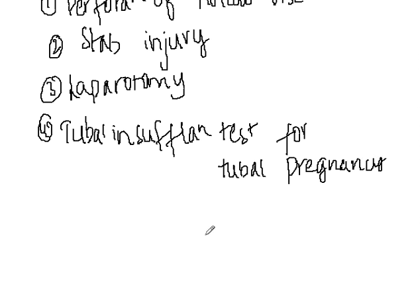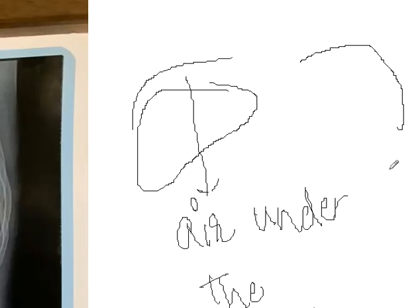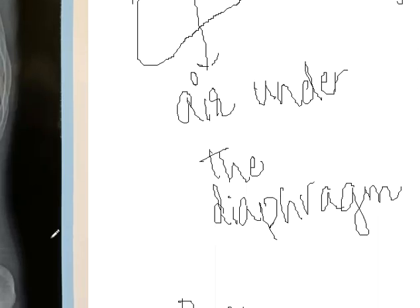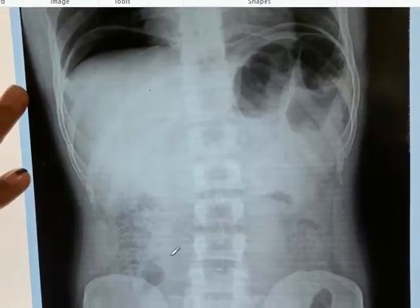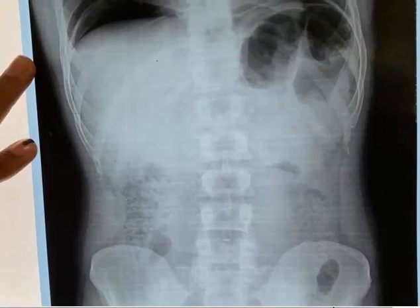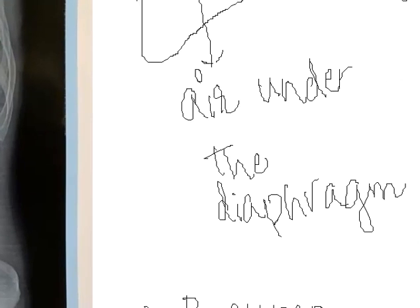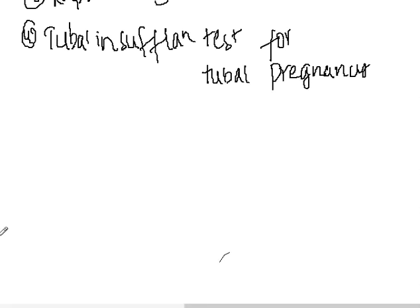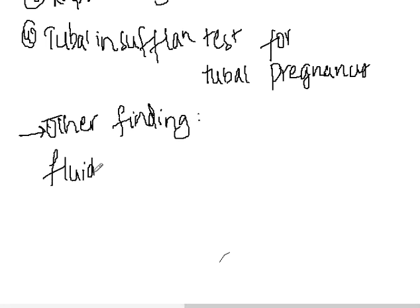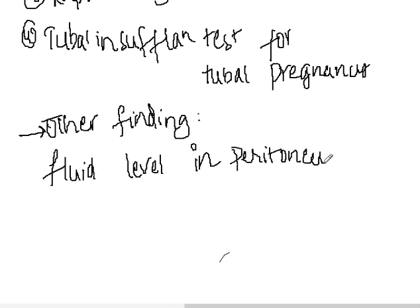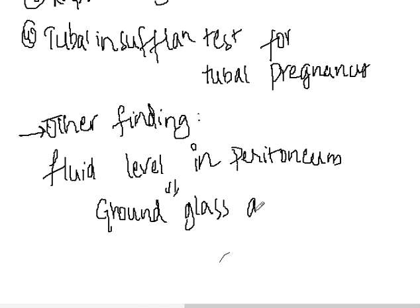They can also ask us whether there is any other finding in the peritoneum. Sometimes you can also see the presence of ground glass appearance of the peritoneum — that is, presence of fluid level in the peritoneum. That can be seen sometimes. This other finding is fluid level, which is called as ground glass appearance.